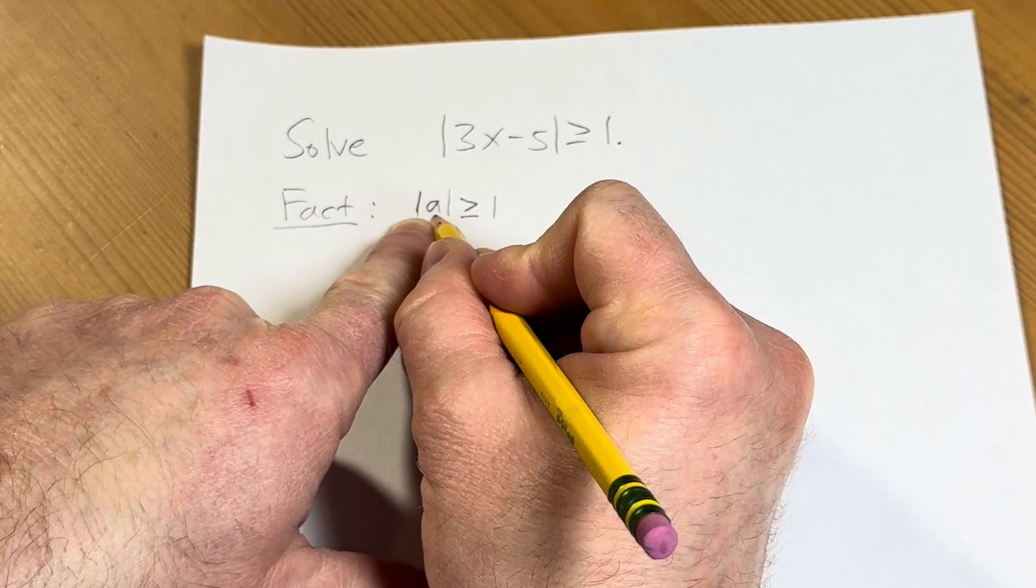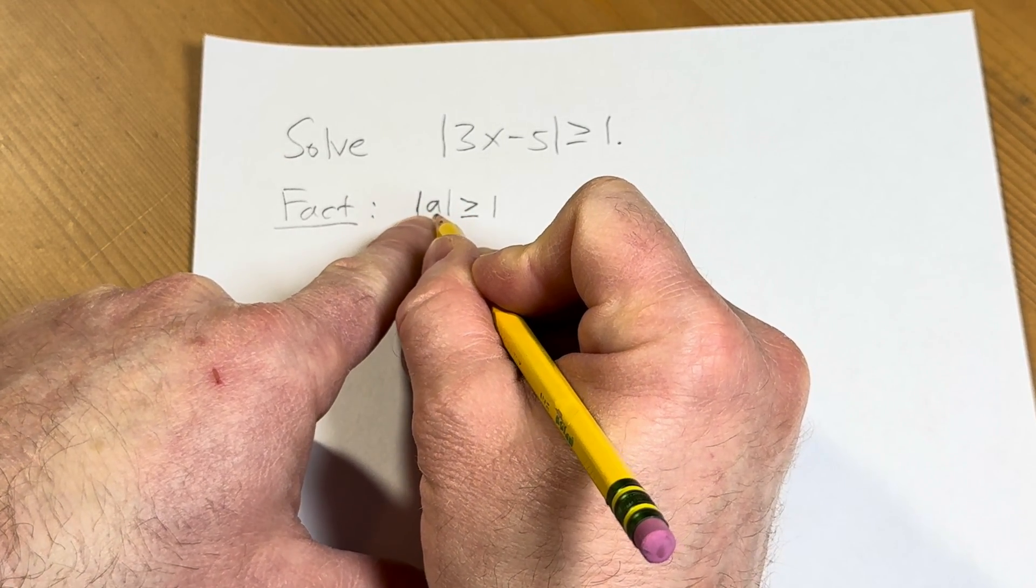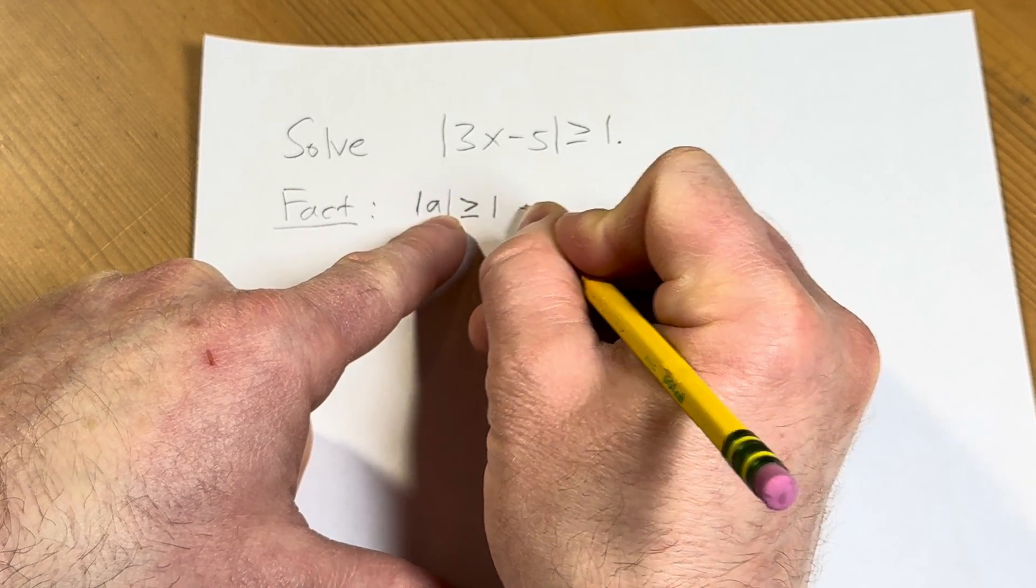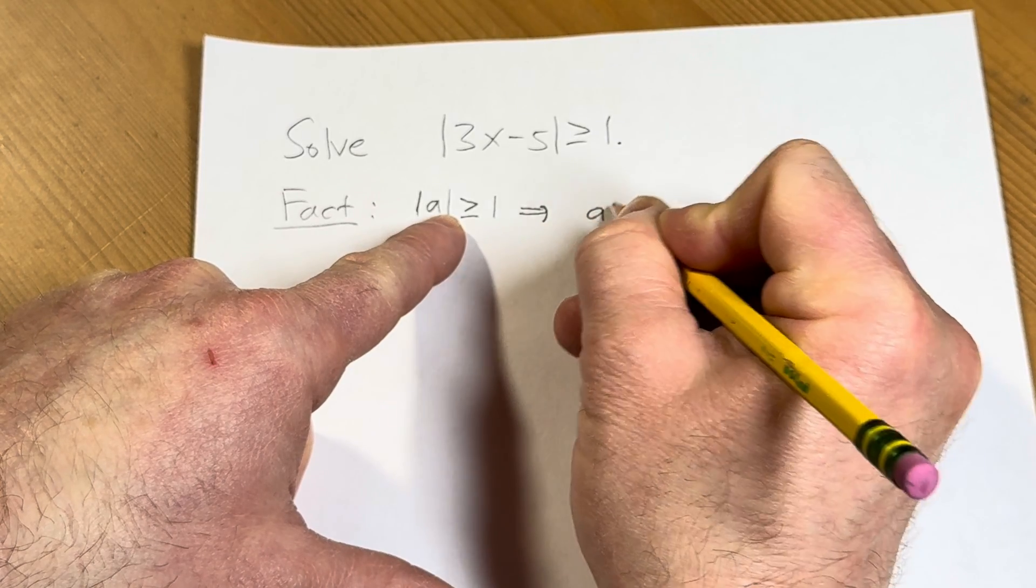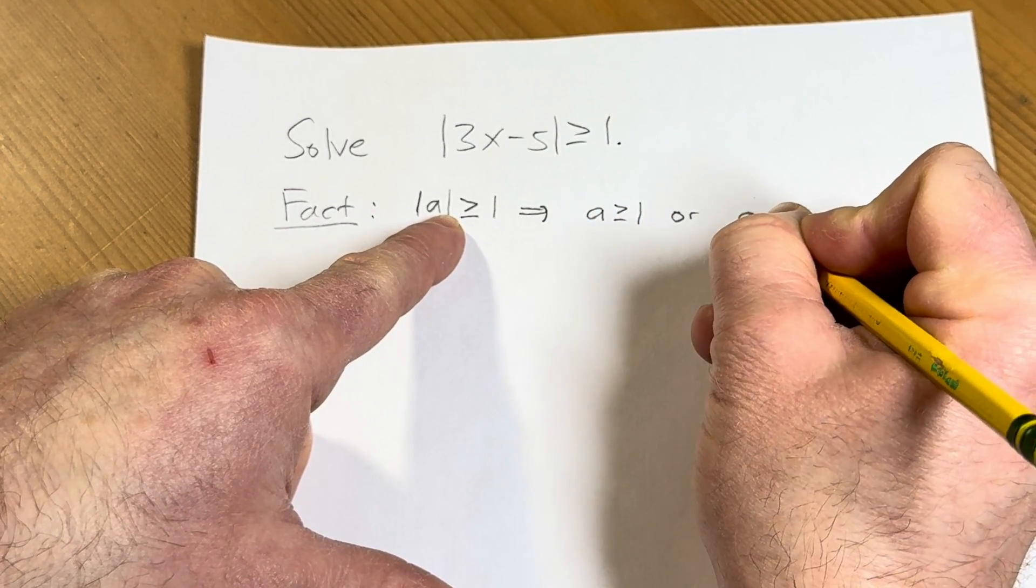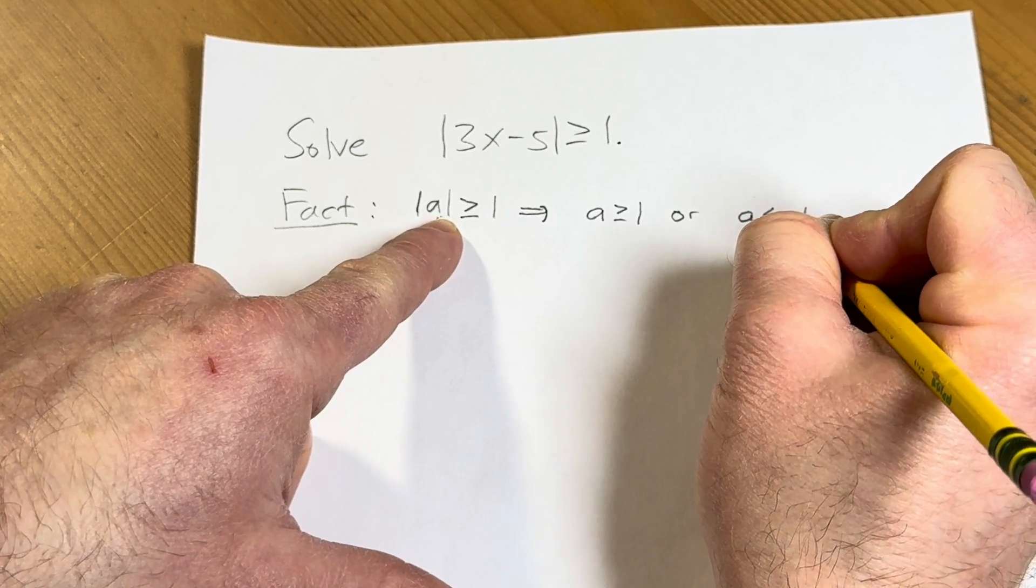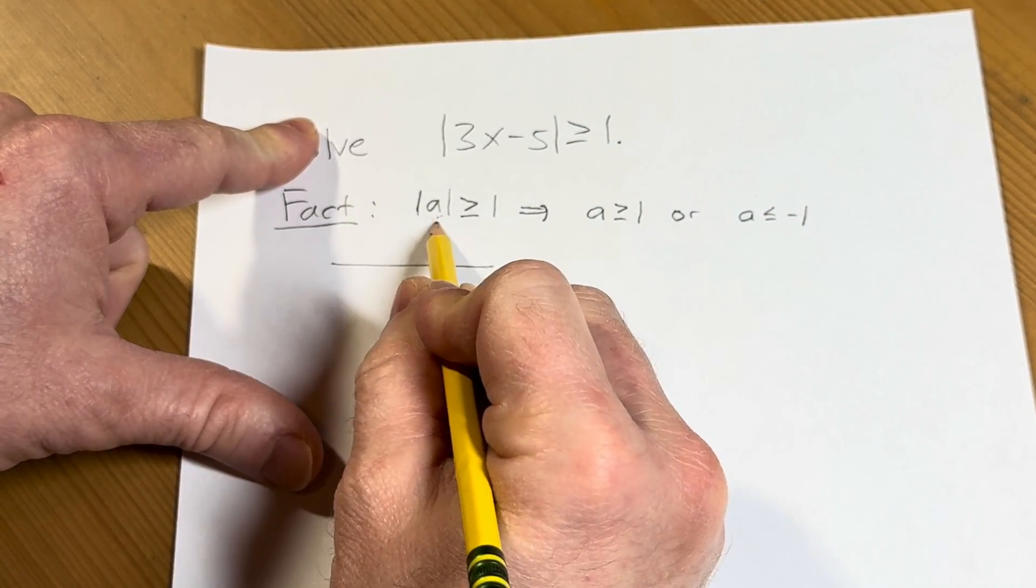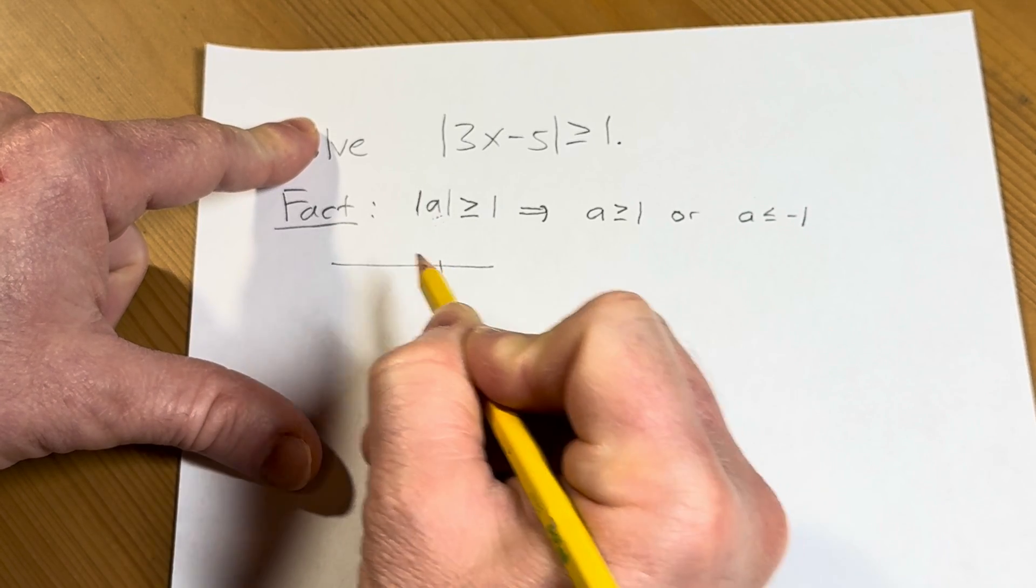This means that the distance between a and 0 is greater than or equal to 1. This means that a is going to be bigger than or equal to 1, or a is going to be less than or equal to negative 1. Because what is this saying? It's saying a is a number whose distance from 0 is greater than or equal to 1. So this is 1,